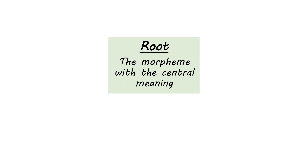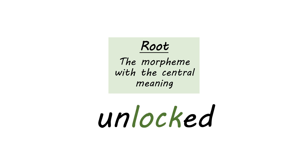Talking about different kinds of morphemes, the most essential to understand is the root. The root of a word is the morpheme that has the central meaning — you get most of your meaning out of the root. So in the word 'unlocked,' the root would be the morpheme 'lock,' because this contributes the most information about what is going on in the action, and all the other pieces of the word are refining that meaning into something more specific.